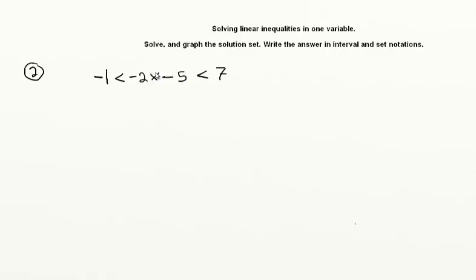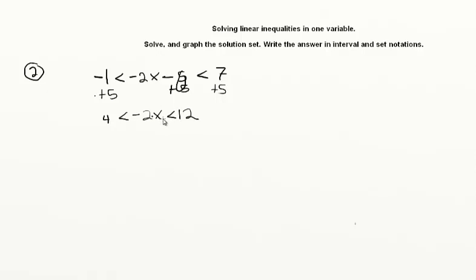To solve for x, my first step will be to add five to all three sides. Since this has to be greater than negative one, I add five there, and since it must be less than seven, I add five there too. We get four is less than negative two x, which is less than twelve. Now we divide by negative two — all three sides — and because dividing by a negative flips the signs, we get four divided by negative two is greater than x, which is greater than negative six.